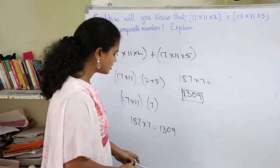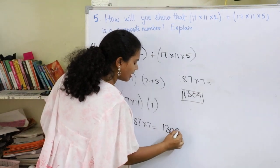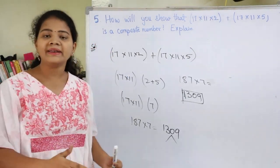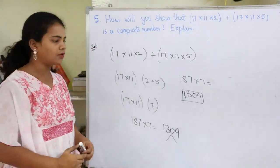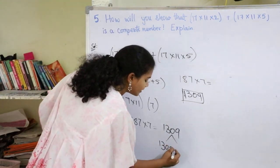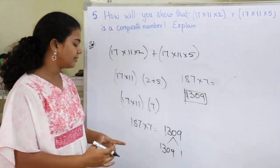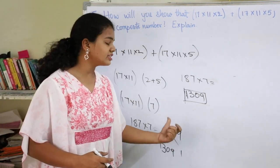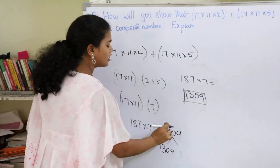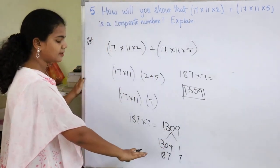By solving the whole question, I got 1309. I can say this is a composite number because a composite number is a number which has more factors other than 1 and the number itself. For this given number 1309, not only 1309 and 1 are the factors, but also 187 and 7 are factors for this number.